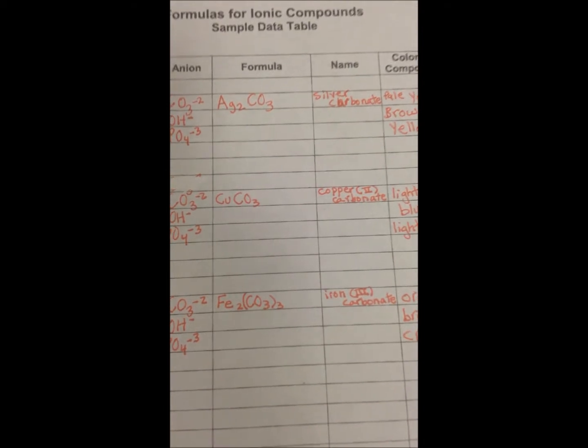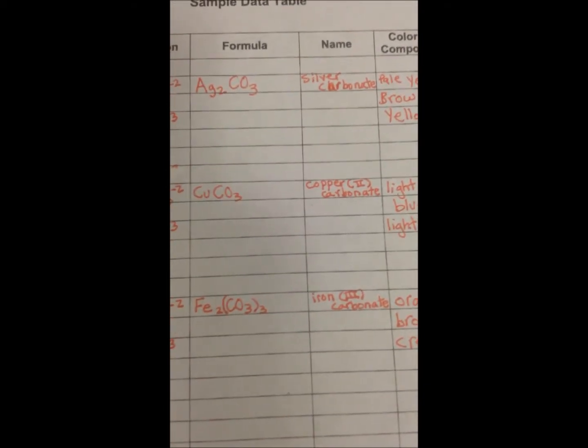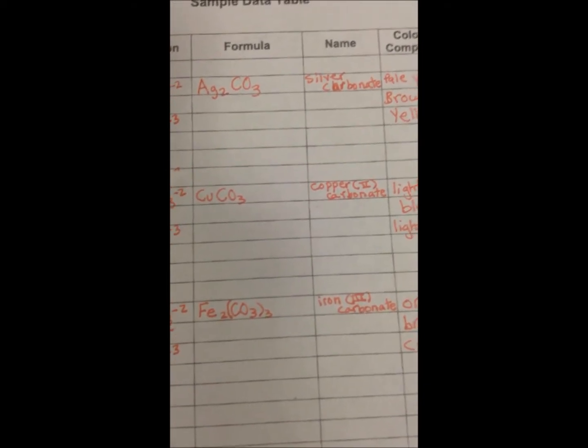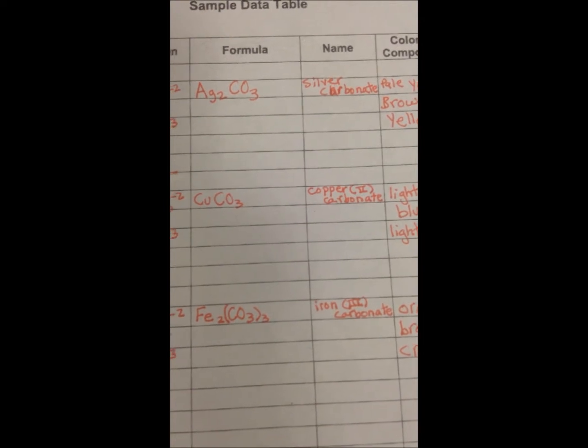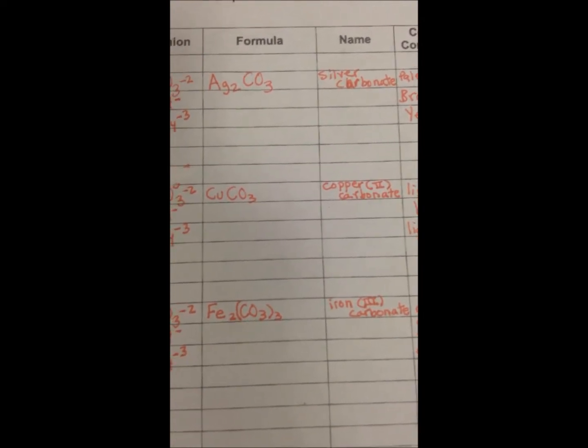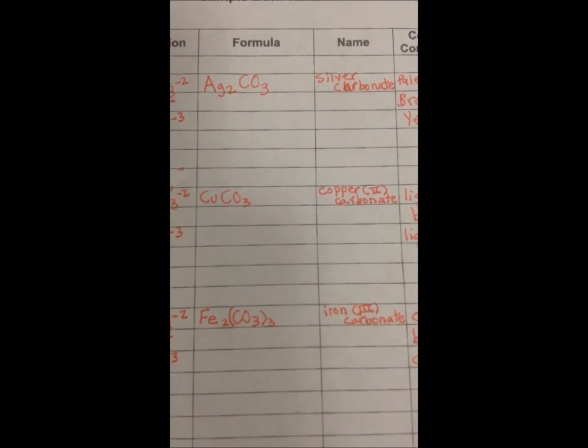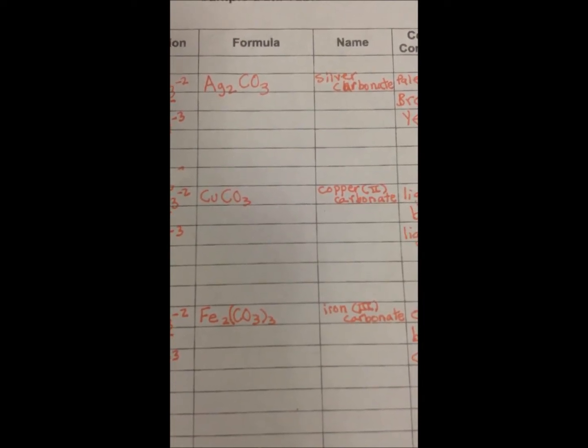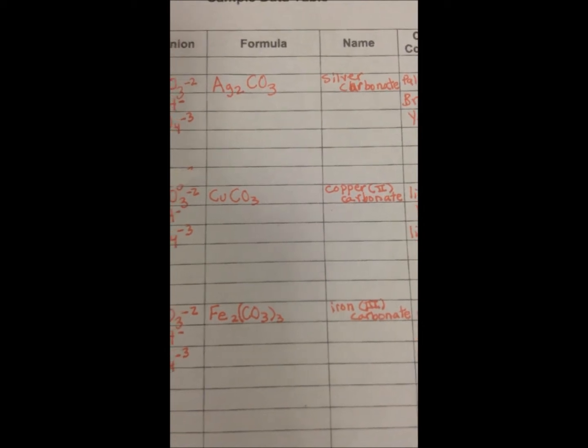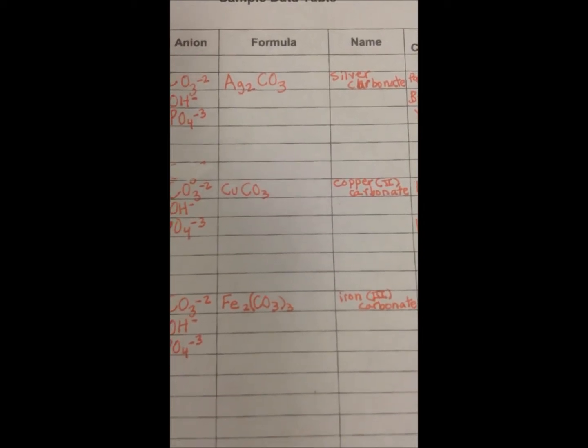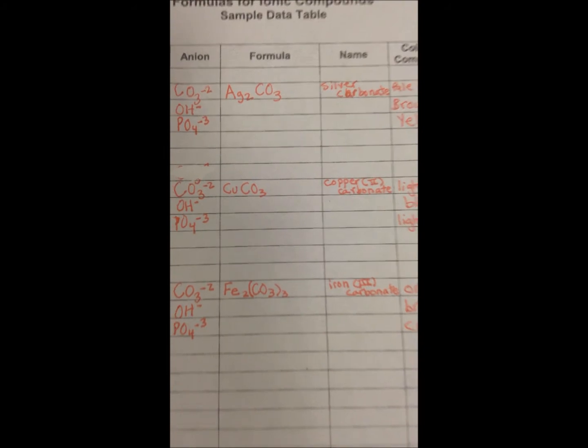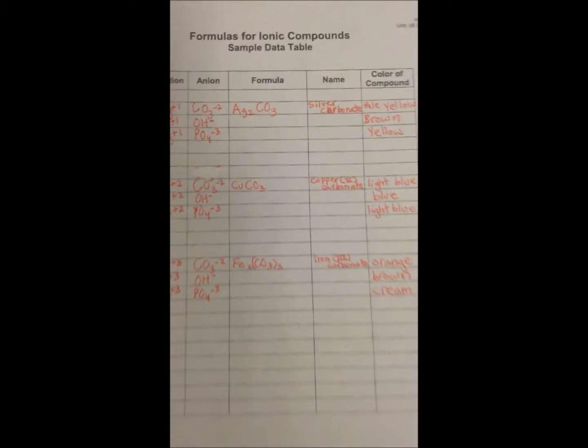Now you must complete your formula and name for all nine compounds. The first is done for you for each of them. So you have silver and carbonate that cross and drop to form the formula that you see, and then the name would be silver carbonate. You will also do the same for copper and for iron.